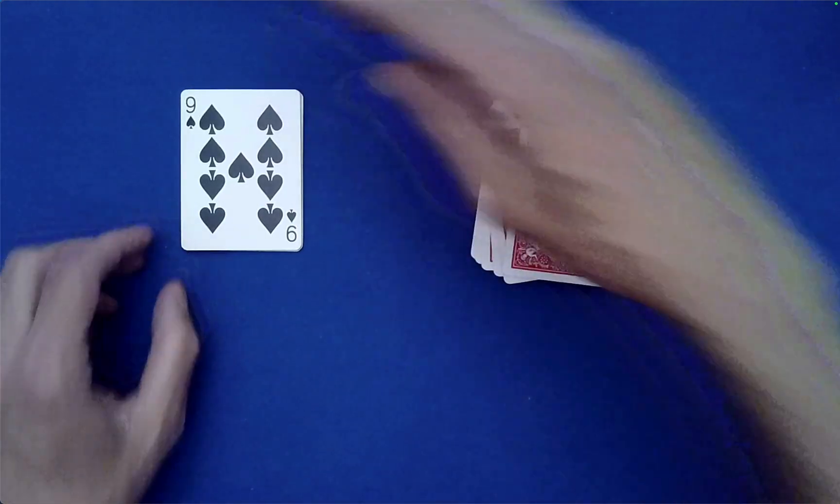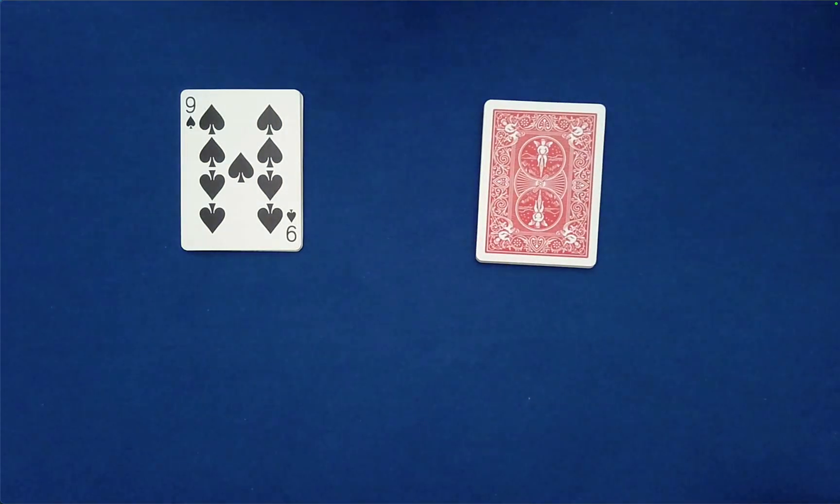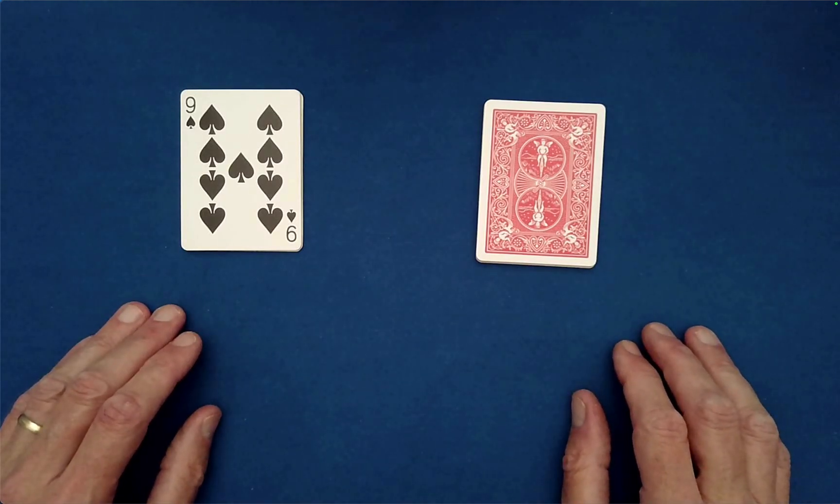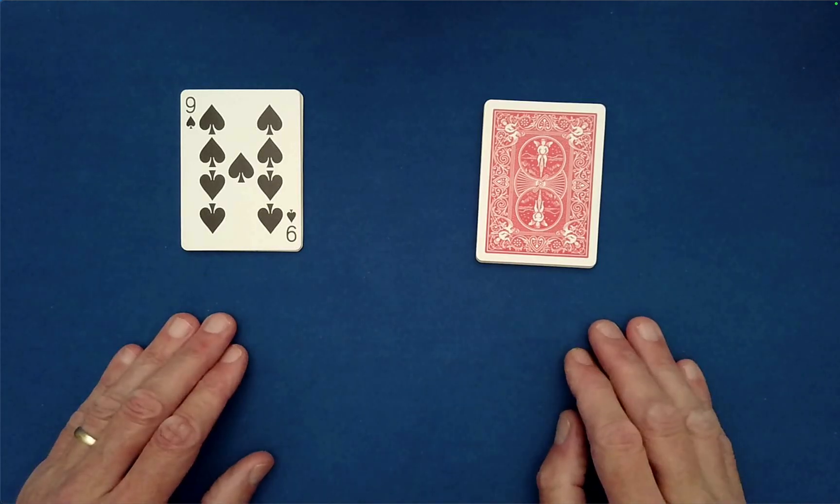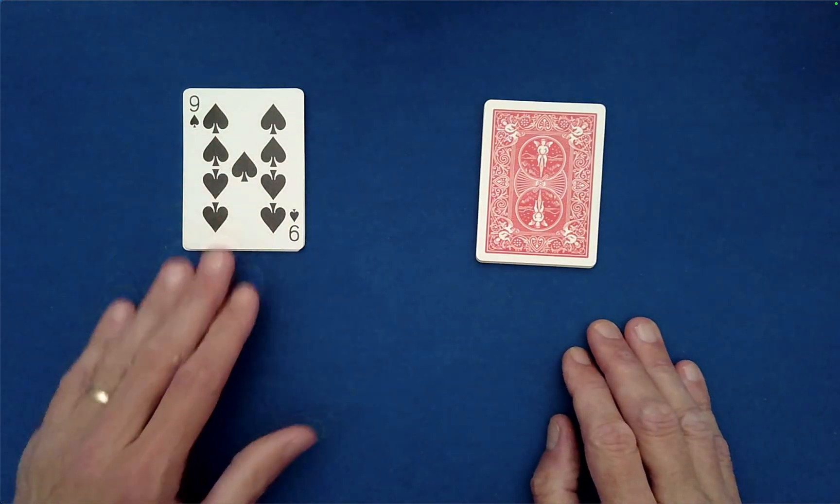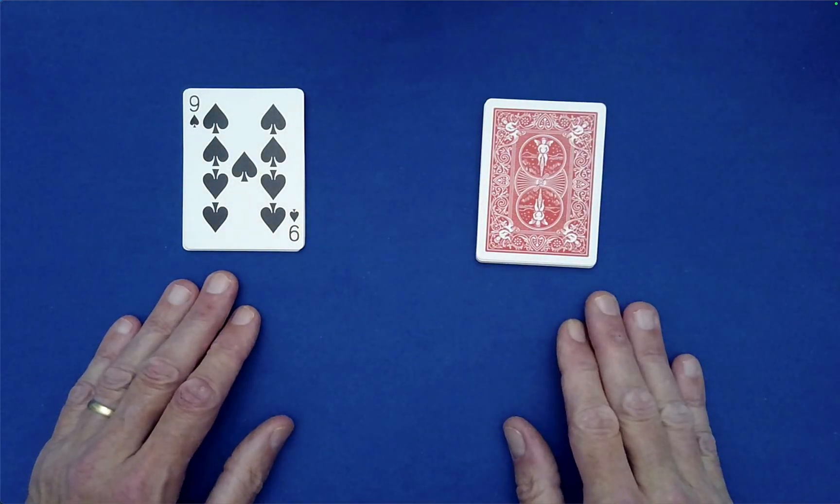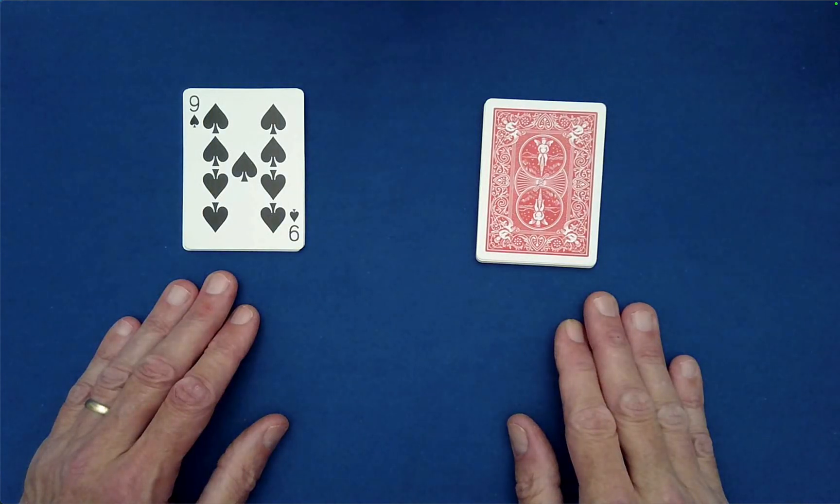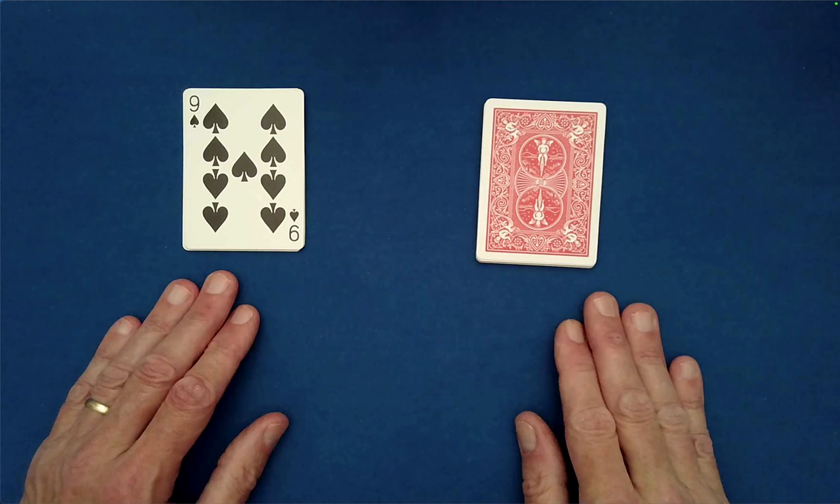And then you just explain to the spectator that you have a strong feeling that you've accomplished something very unlikely, that you were able to separate and place cards in such a way that these two packets of cards now have exactly the same number of face-up cards. Now the spectator should give that a little bit of thought because we had seven face-up cards.